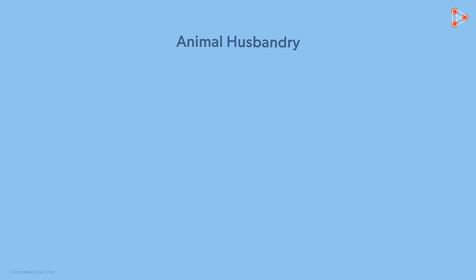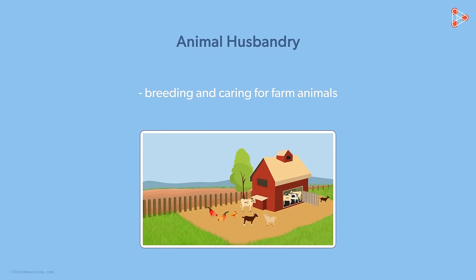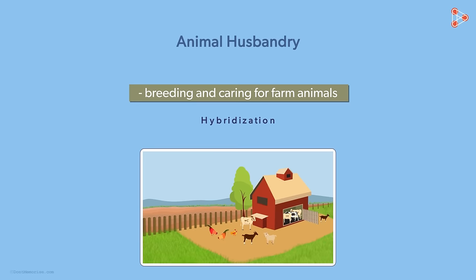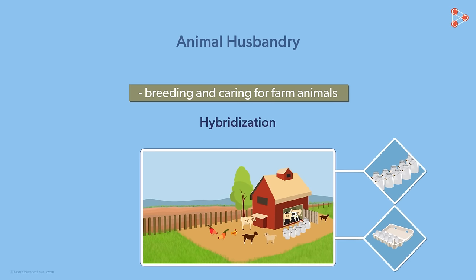What do you understand by the term animal husbandry? By definition, it is the science of breeding and caring for farm animals. You have studied about hybridization of different breeds of animals in lower grades. We employ techniques of hybridization to ensure good qualities of animals which prove advantageous to humans.